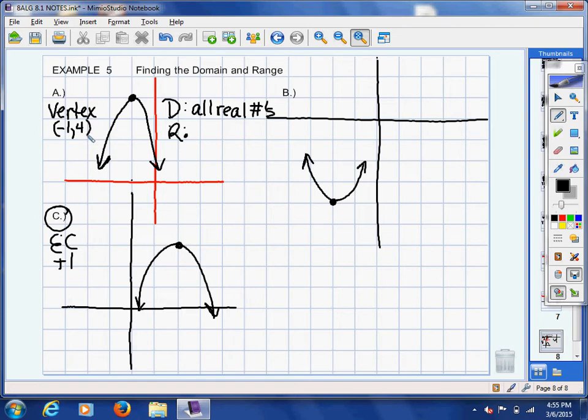Now because our parabola opens down, this is a maximum point. Our maximum is 4. If you always focus on the y-value in your vertex, the y-value in your vertex is your maximum if the parabola opens down or the minimum if your parabola opens up.